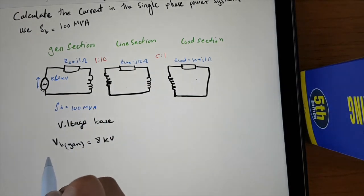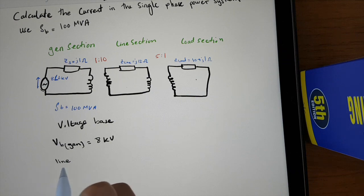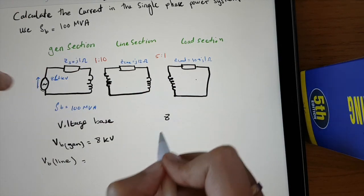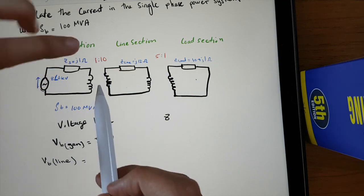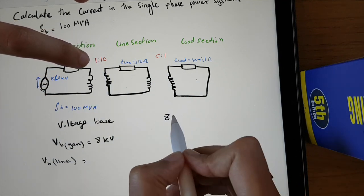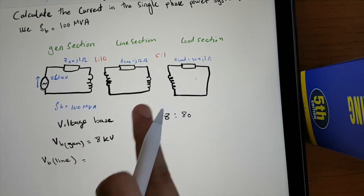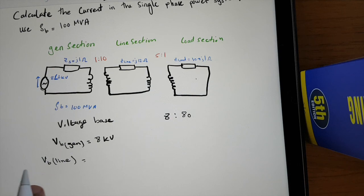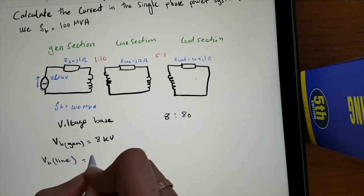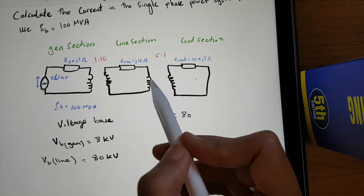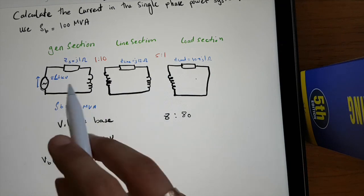For the line section, we use the transformer ratio. We have 8 kV on the generator side, which corresponds to a ratio of 1. So on the other side with ratio 10, we simply have 80 kV. So V_base for the line section is 80 kV.